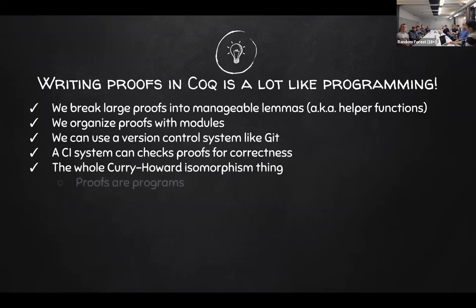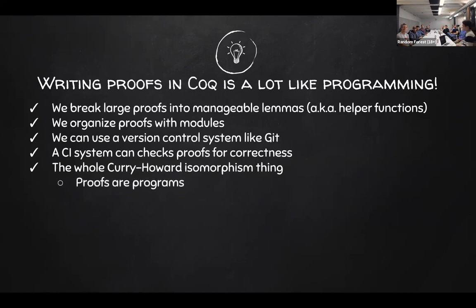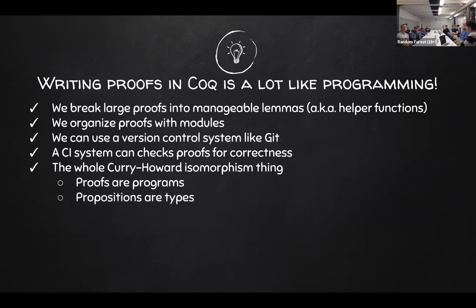Also, the Curry-Howard isomorphism — how many of you have heard of this thing before? The basic idea is that whenever you write a program, you're really writing a proof. Or whenever you write a proof, you're writing a program, and the theorem that you're proving is the type of that program. That's called 'propositions as types.' Phil Wadler likes to talk about this a lot.